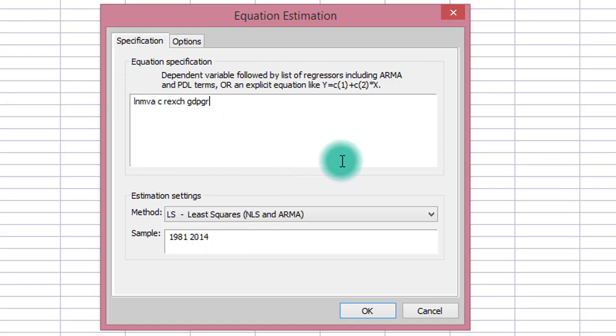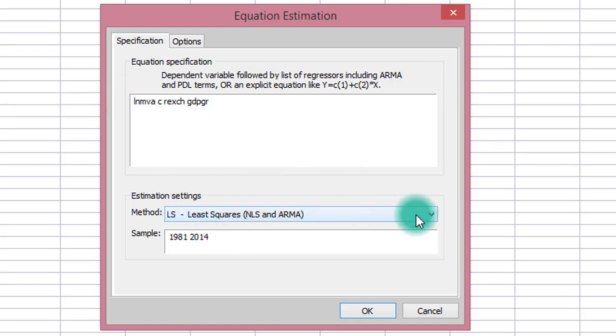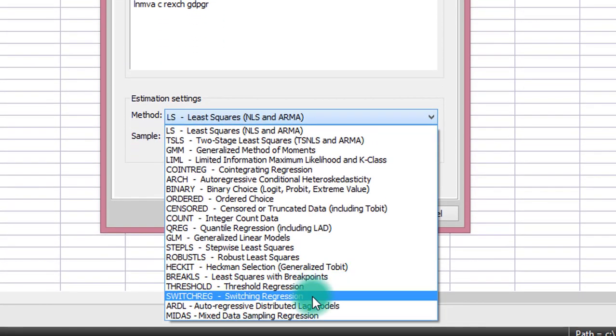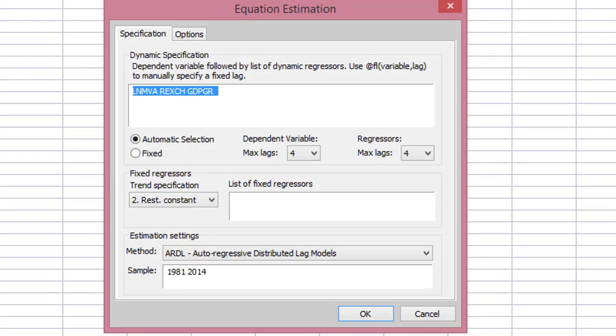Under Model, I'm going to change the least squares and select ARDL. For the maximum lags, because I only have 34 observations, that is a 34-year span, I'm going to limit the maximum lag to only one, so I'm changing four here to one. And I'm using the restricted constant option in this situation. So ARDL is specified, and I click OK.